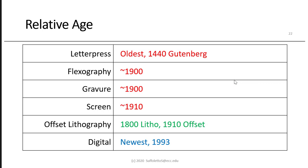The relative age of the printing processes: letterpress is the oldest, dating back to 1440 when Gutenberg invented movable type. Flexography and gravure are from the 1900s. Screen printing is from around 1910. Offset lithography dates back to the 1800s for lithography with stone, and to 1910 when it started using the offset transfer process — prior to 1910 it was direct lithography. Digital production color printing presses came out around 1993 — I remember being at Rochester Institute of Technology when we got an Indigo and a Xeikon printing press.